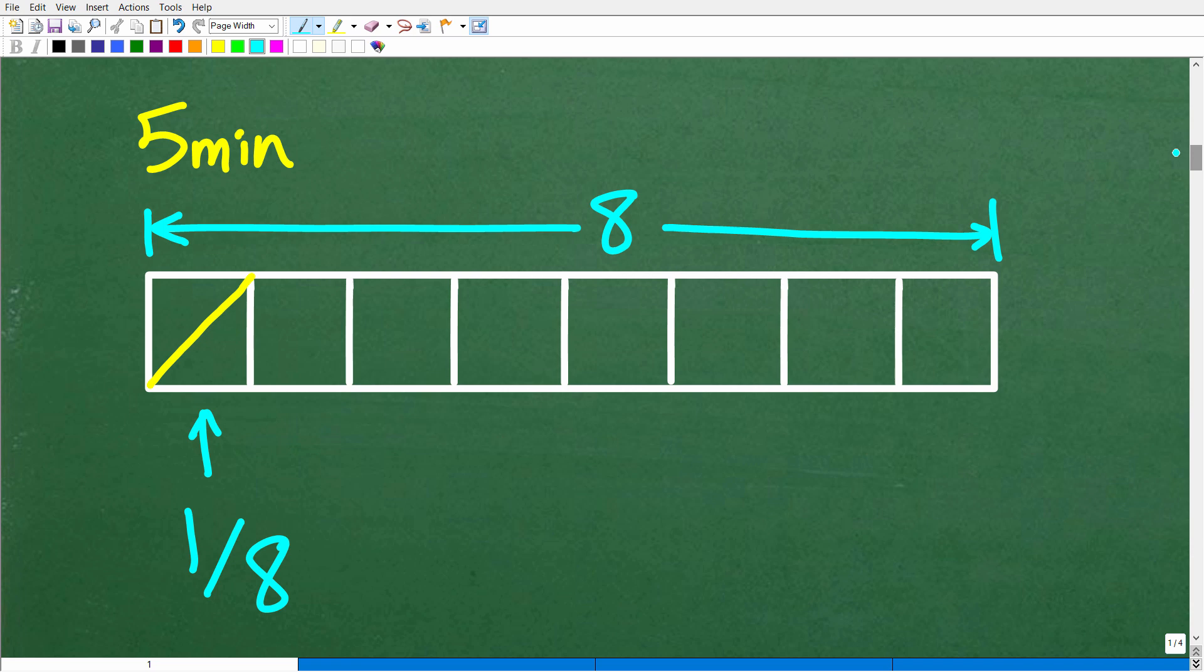Just don't read the problem once and then start doing stuff. Read the problem one time, think about it, make sure you understand it. Read it a second time, pull in some more details. And then the third time you read it, make sure you understand the question. We want to figure out how long it takes to finish the entire lawn.